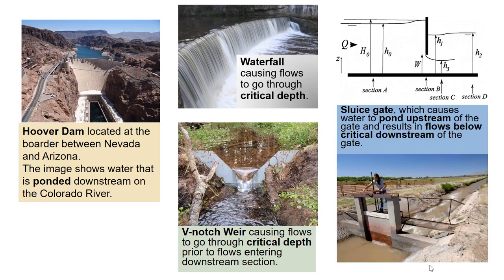A sluice gate, as shown in this image, will cause the water upstream of the gate to be subcritical, and the flows downstream of the gate to be supercritical. The subcritical flows on the upstream side result in a backwater effect. While on the downstream side, we will have supercritical flows with an upstream control of the sluice gate itself, resulting in flows below critical depth.